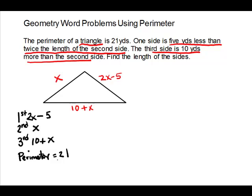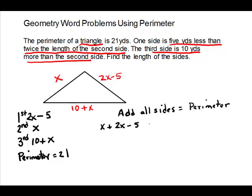We use the definition of perimeter to make our equation — add all the sides and that equals the perimeter. Going around the triangle: x plus 2x minus 5 plus x plus 10 equals 21.